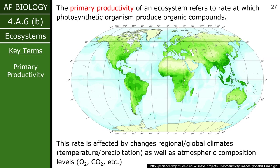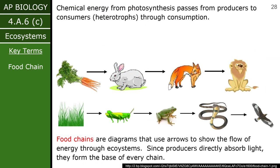We can actually quantify this and calculate the primary productivity of an ecosystem — basically how quickly can photosynthetic organisms do their job, how quickly can they produce. We can figure out where in the world the most carbon is being taken in and put into plant matter. That's a really big deal and actually really useful right now when we're worried about global climate change.